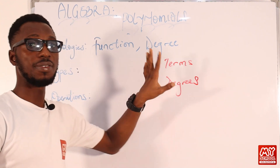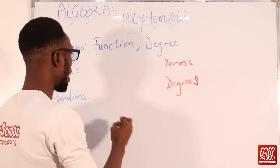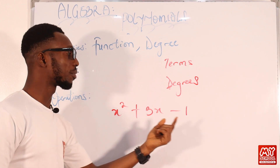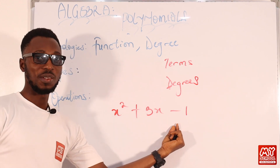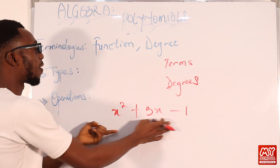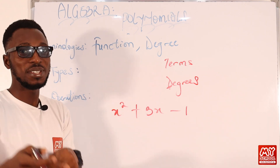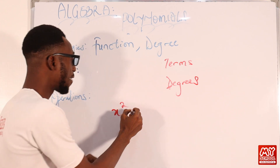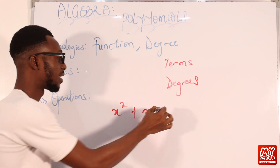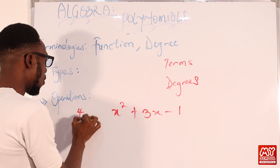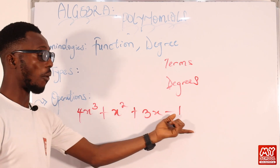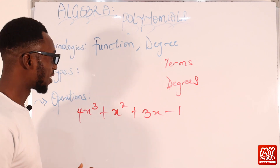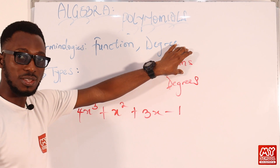When we classify polynomials based on terms: remember an algebraic expression like x² + 3x − 1 has three terms. This type of polynomial is called a trinomial — three terms. If you have just one term, it is a monomial. If you have two terms, that is a binomial. Three terms is a trinomial. And if you have something like 4x³ + x² + ... with four or more terms, that is simply called a polynomial.